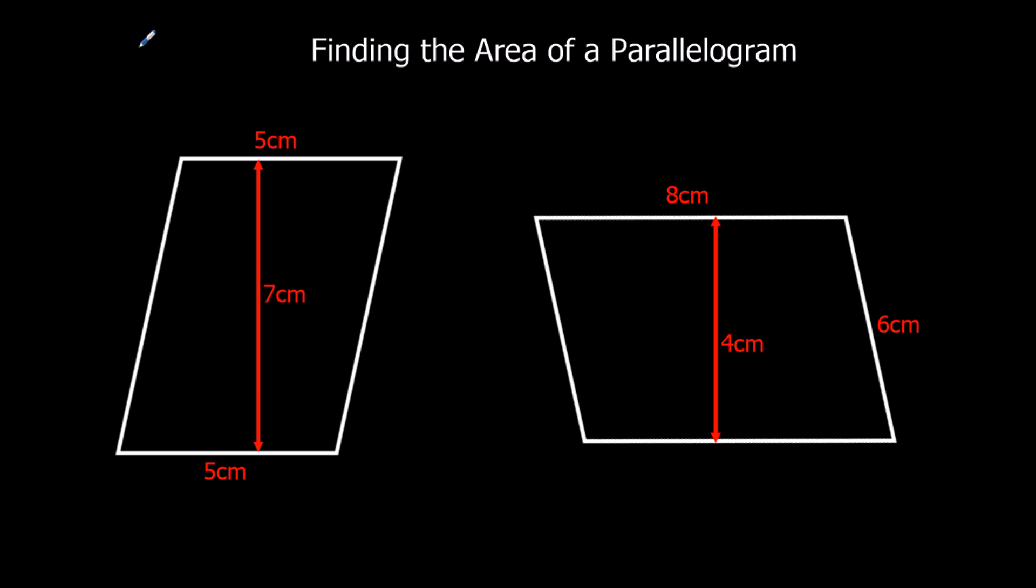Let's look at these two. The area of a parallelogram, remember, is the base times the perpendicular height. Here we've got a base of 5 and a perpendicular height of 7. So this one's 5 times 7, and that's 35 centimeters squared.